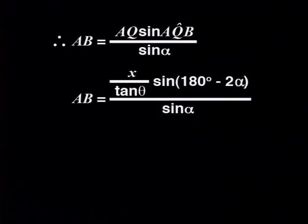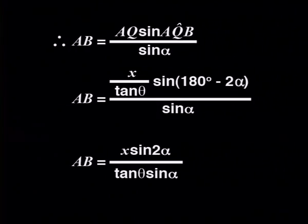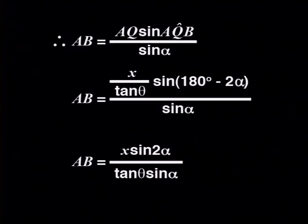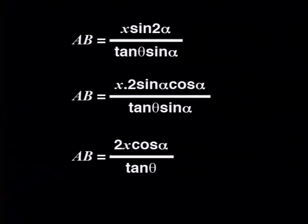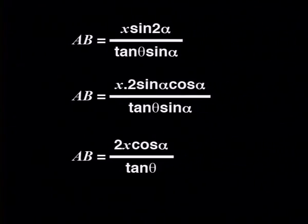We can write tan theta in the denominator since that appears in the answer. Using the reduction formula, sine(180 minus 2 alpha) equals sine(2 alpha). Then applying the double angle identity, sine(2 alpha) equals 2 sine alpha cosine alpha. The sine alpha in the numerator and denominator cancel, leaving AB equals 2X cosine alpha divided by tan theta. We got the distance AB equal to what was asked for.